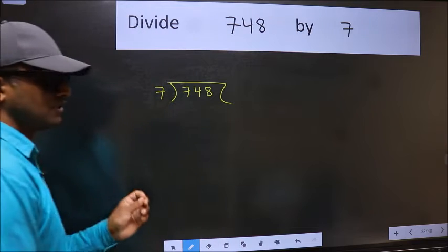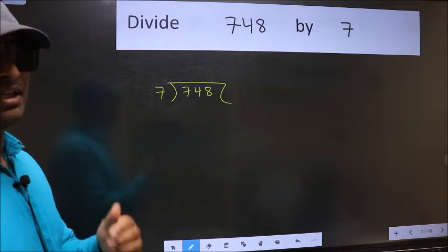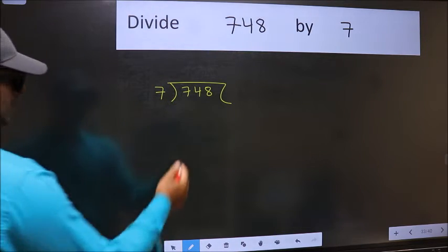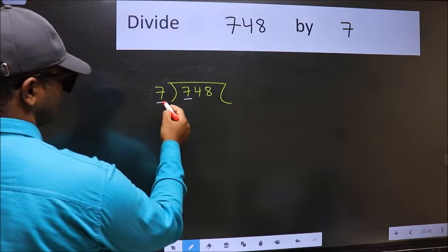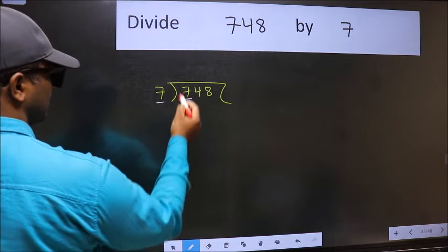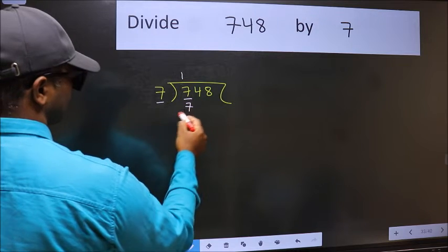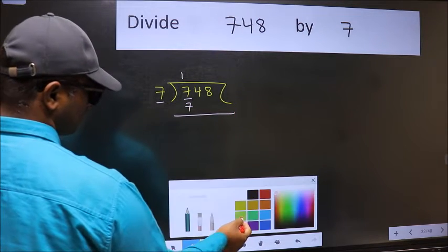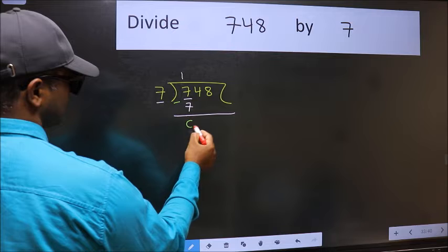This is your step 1. Next. Here we have 7 and 7 here. When do we get 7 in 7 table? 7 once, 7. Now we should subtract. We get 0.